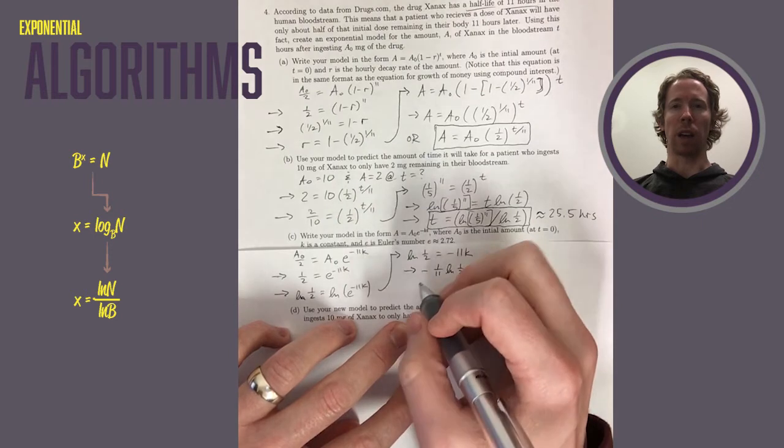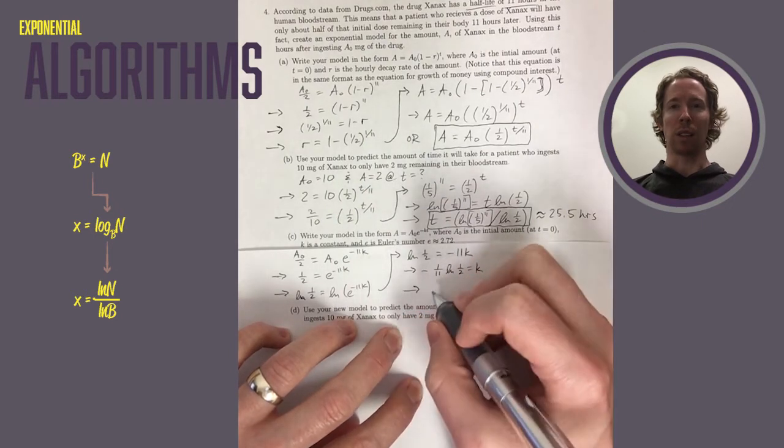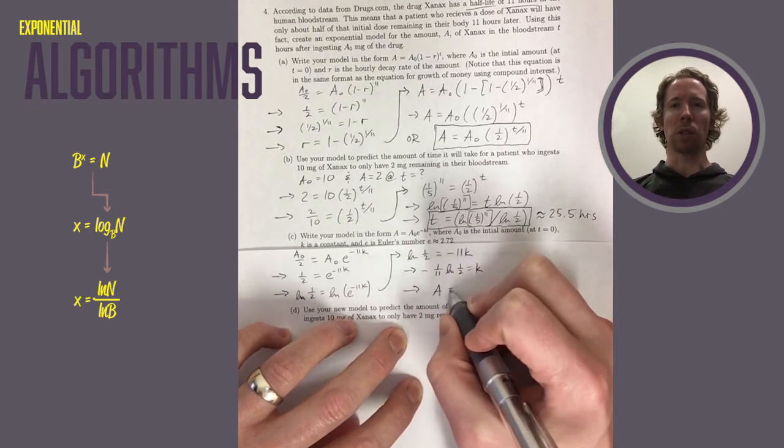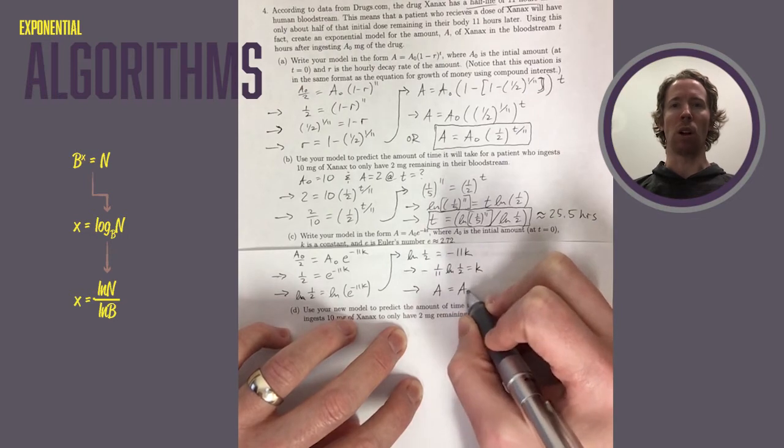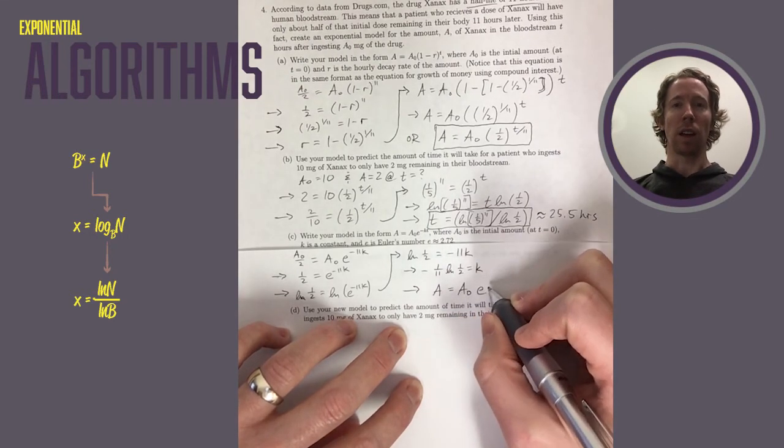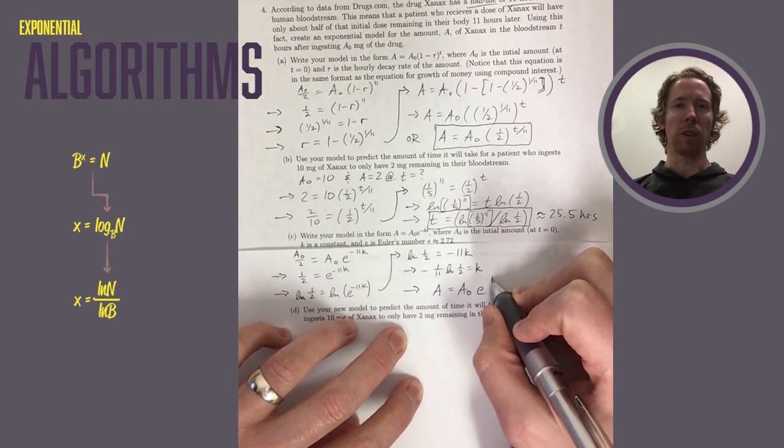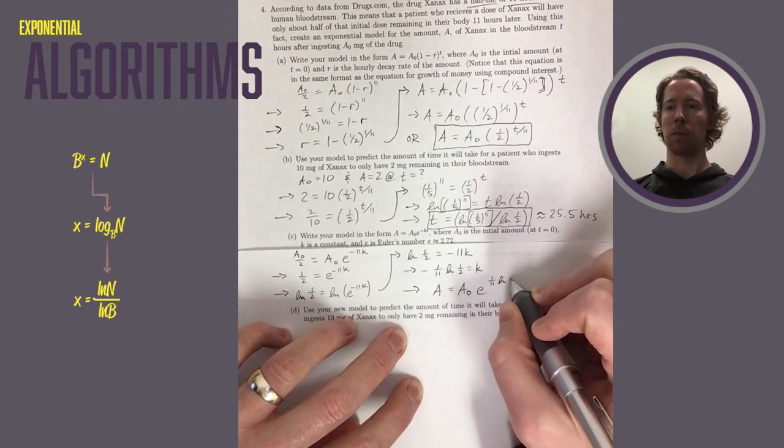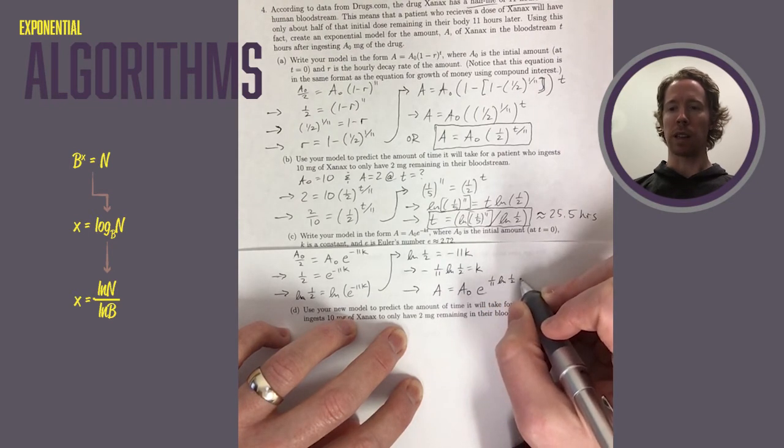So now we just go back and fill in what k was. Since we've got two negatives multiplied together, that gives us a positive 1 over 11 natural log of 1 half. And that value is a negative number. Natural log of 1 half is a negative number. So that's the exponent.